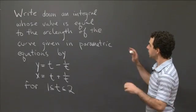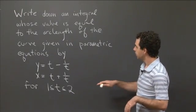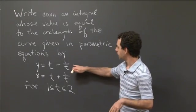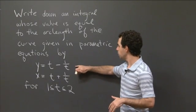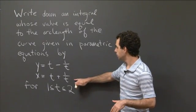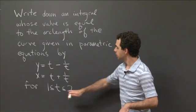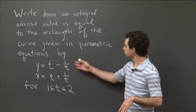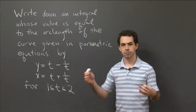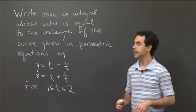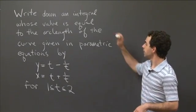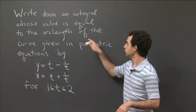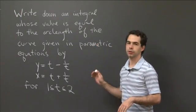In particular, I have here the parametric equations y = t - 1/t and x = t + 1/t for 1 ≤ t ≤ 2. So those parametric equations trace out some piece of a curve in the plane. And what I'd like you to do is write down an integral whose value is equal to the arc length of that curve.